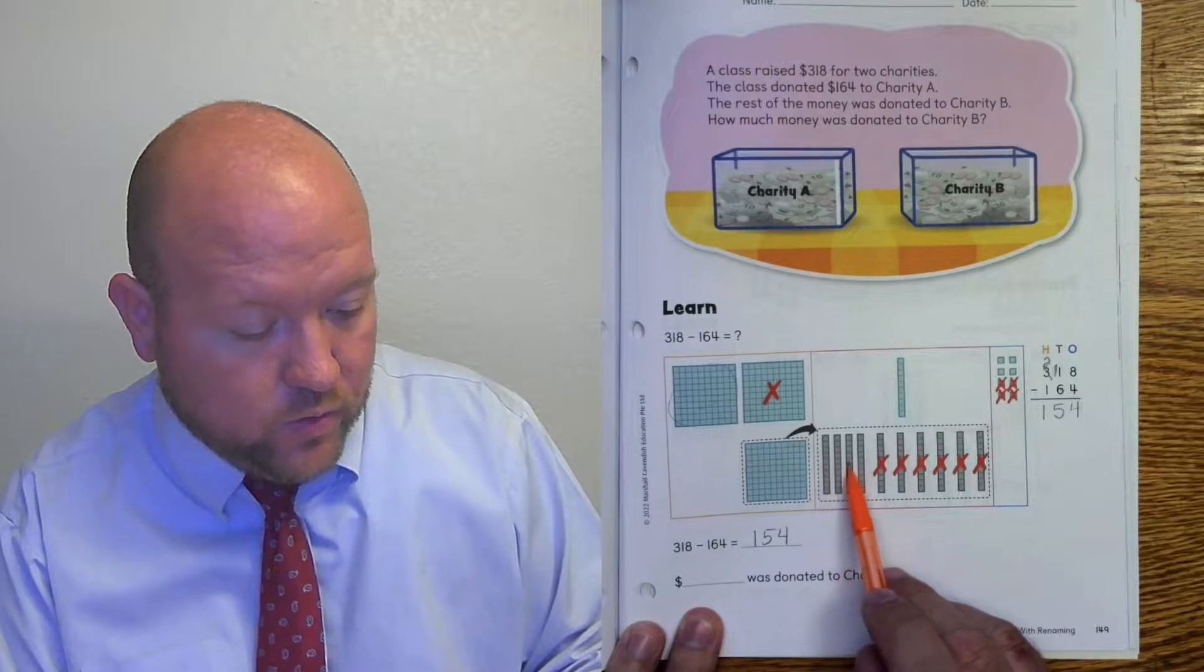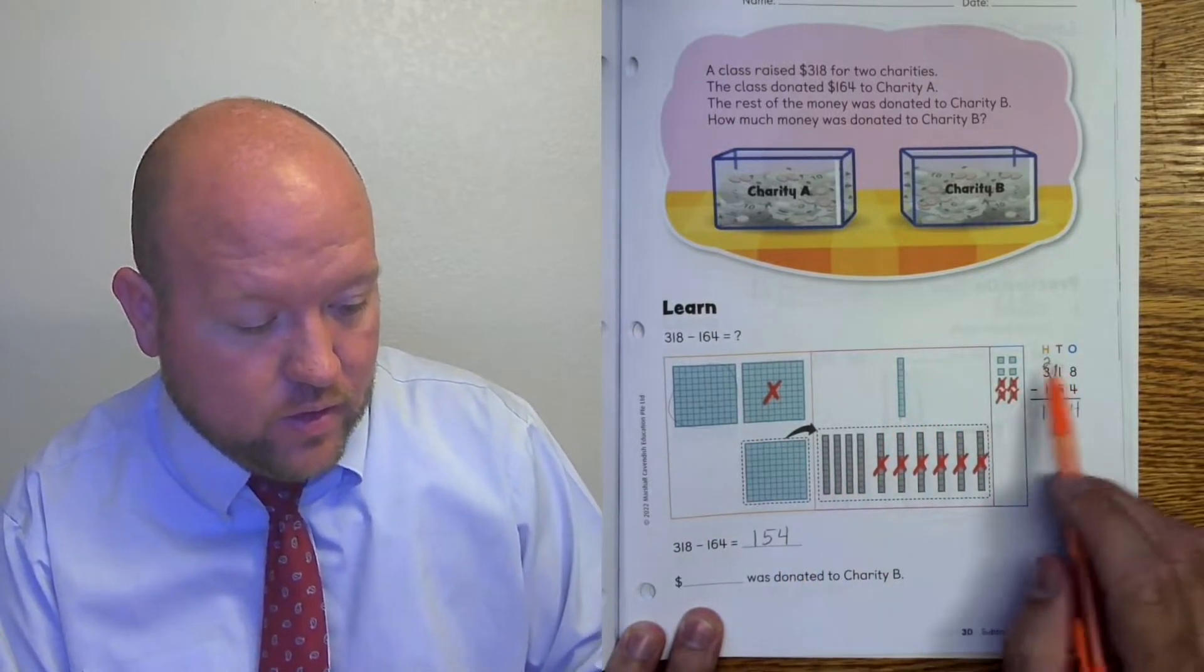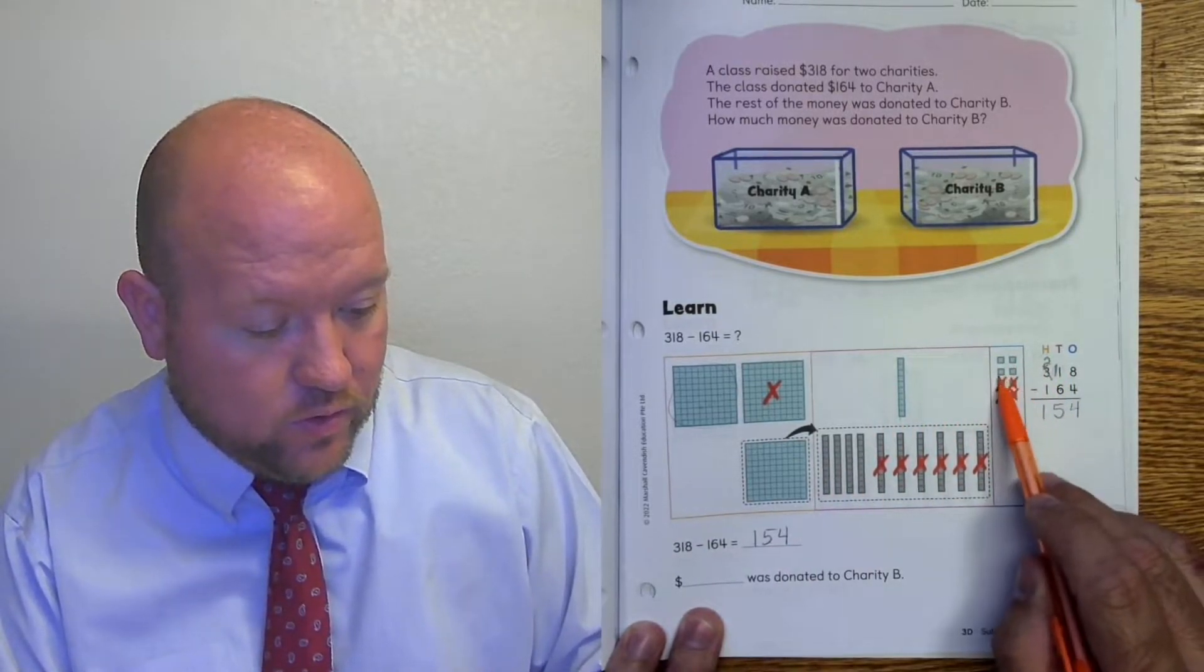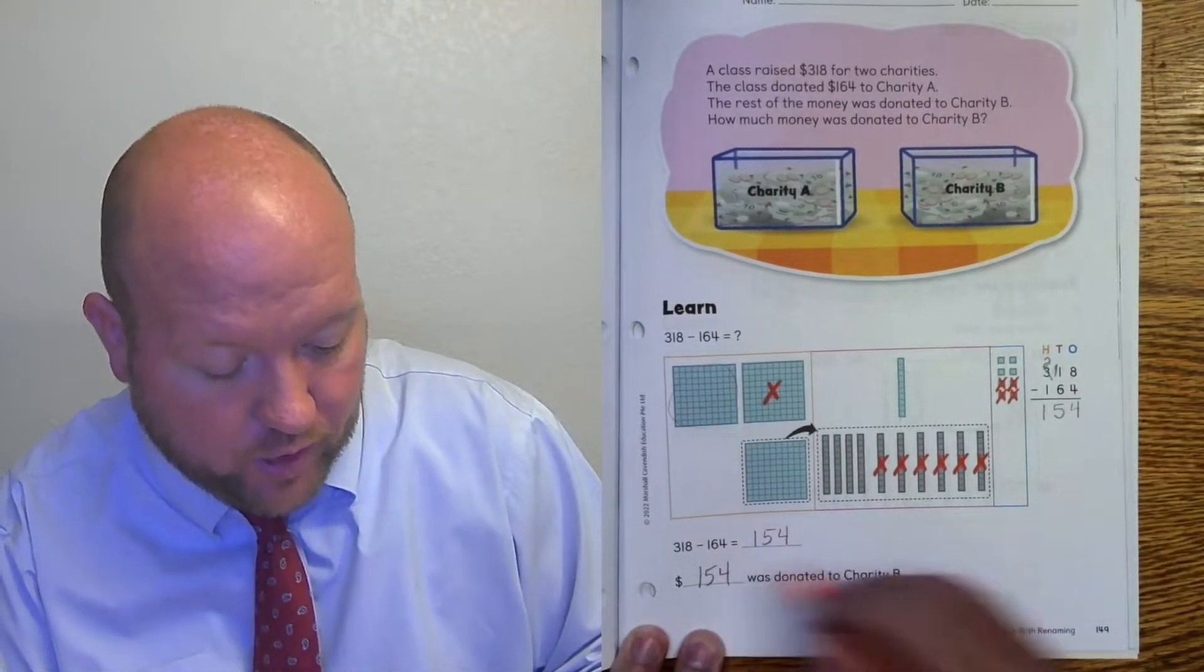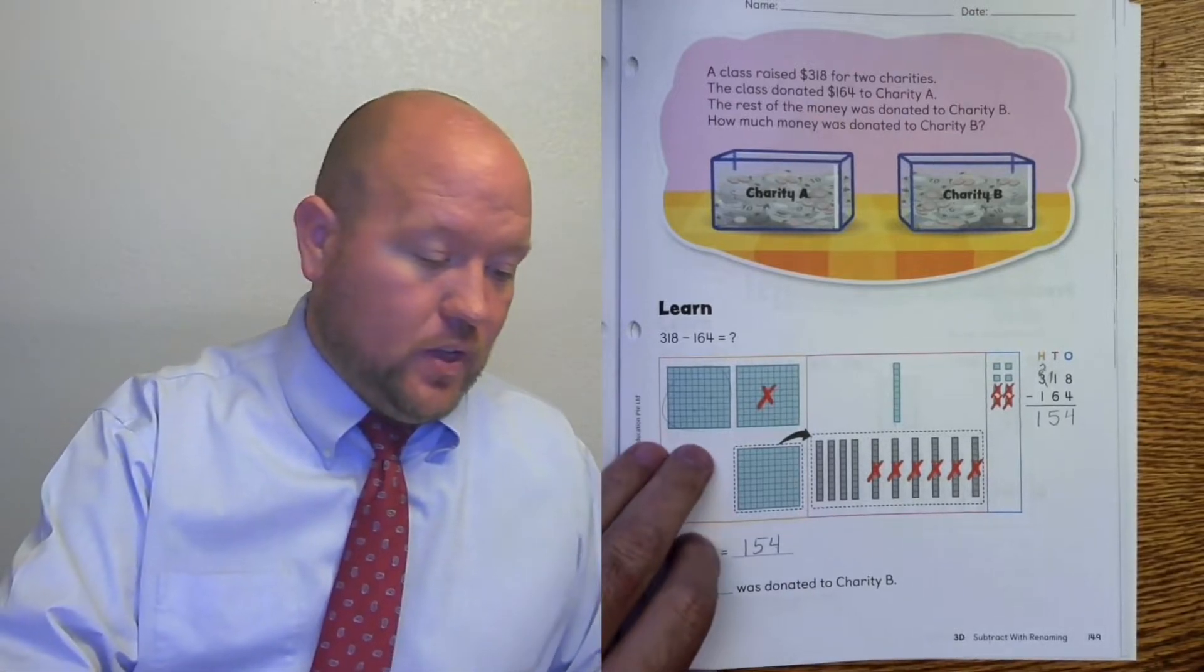100, 1, 2, 3, 4, 5. So 50, 1, 2, 3, 4, 4. So $154 was donated to Charity B.